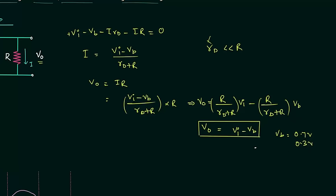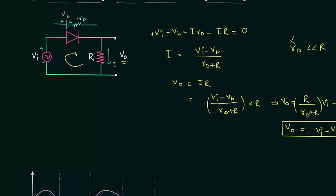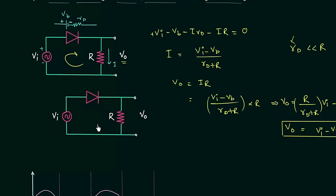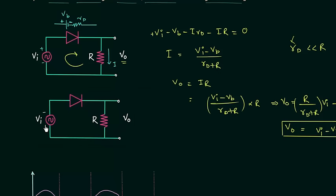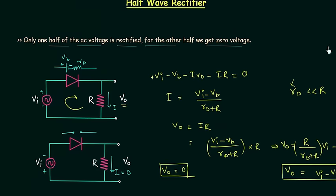Now we will find the output voltage in case of reverse bias condition. The diode will be reverse biased when the polarity of input voltage reverses. I will replace the diode with its equivalent model, which is an open circuit. Since the circuit is open, there will be no current and I equals zero. So the output voltage is equal to zero volts in case of the negative half cycle. That confirms only one half of the AC voltage is rectified; for the other half, output voltage is zero.